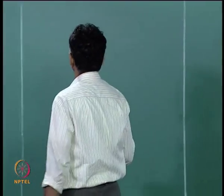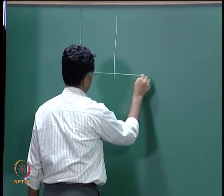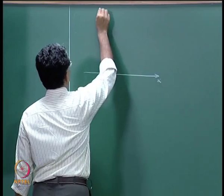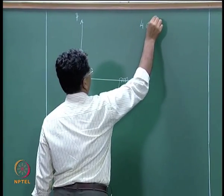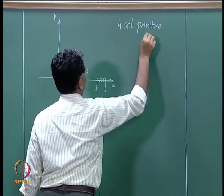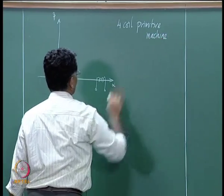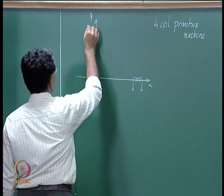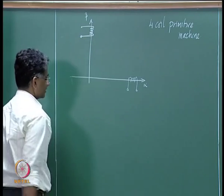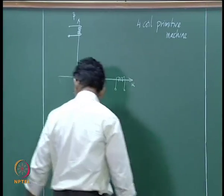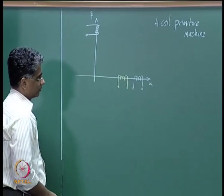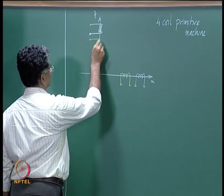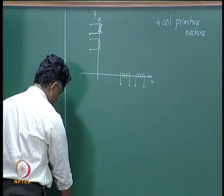Let us continue with the machine equations derived in the last lecture. We derived expressions for a four-coil primitive machine: one coil on the α axis of the stator, another coil on the β axis of the stator, and then fictitious coils representing the rotor on the α and β axes of the stator.